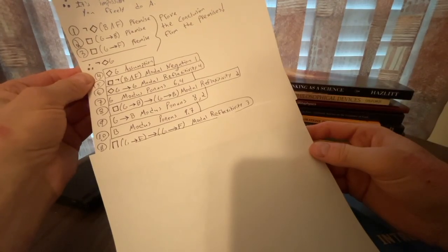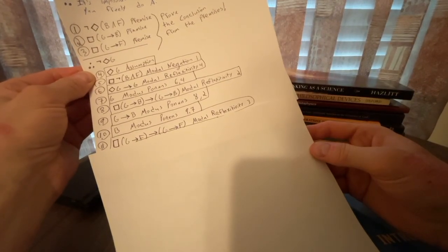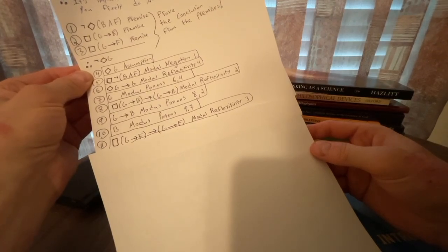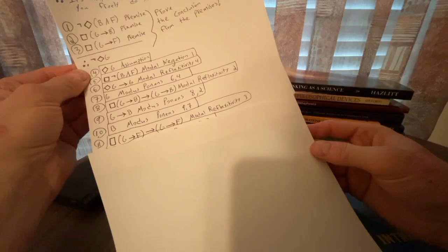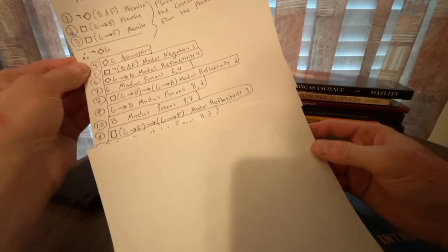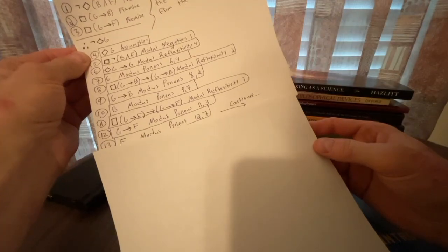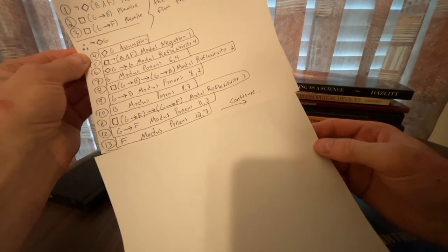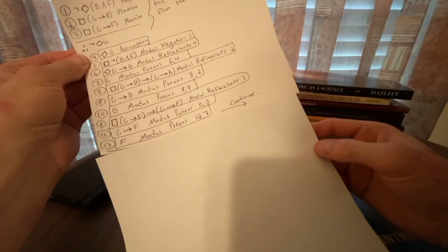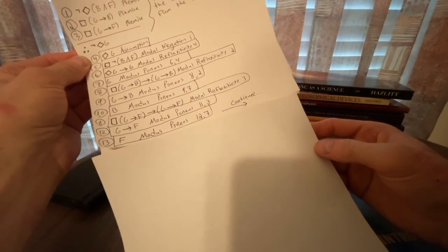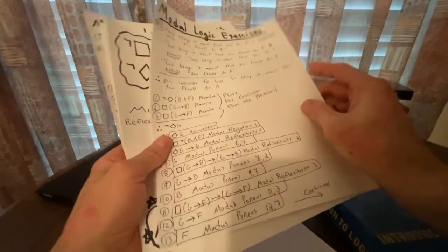For line 11, we'll use modal reflexivity on line three to get box parentheses G arrow F close parentheses arrow parentheses G arrow F close parentheses. Doing that explicitly allows us to get the next line G arrow F, if G then F, because we have a legitimate modus ponens inference with lines 11 and three. And then we could do another modus ponens inference because we have a line 12 and we have a line seven to get that F. And then I'm going to try to continue this proof and arrange these papers hopefully in a decent matter.